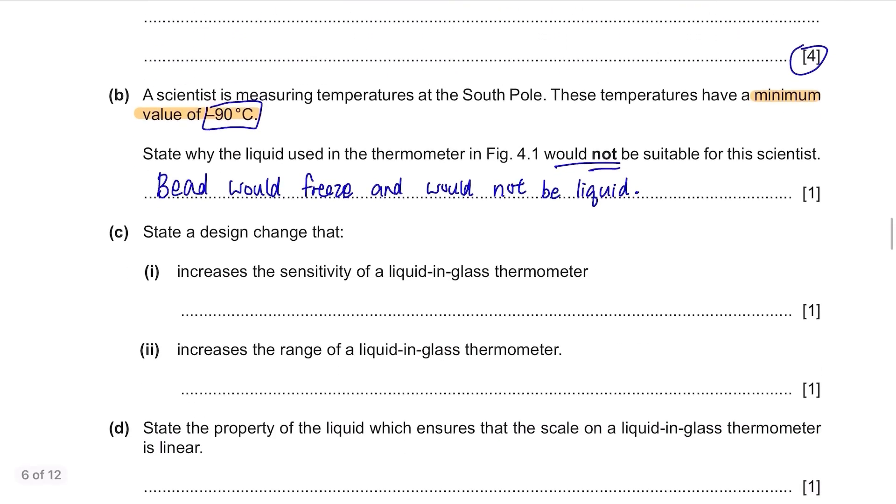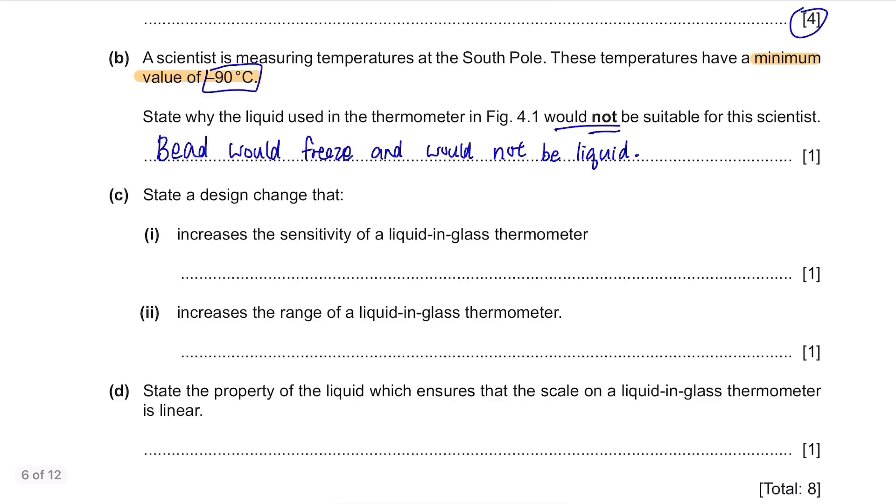Part C. State a design change that increases the sensitivity of a liquid in glass thermometer. To increase the sensitivity of a thermometer, we can use a thinner tube. In this way, you will easily spot a small change in temperature. Another way is to use a liquid that expands more per unit change in temperature. The liquid will be more sensitive and travel more from the same temperature change.